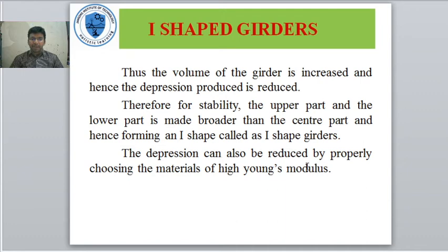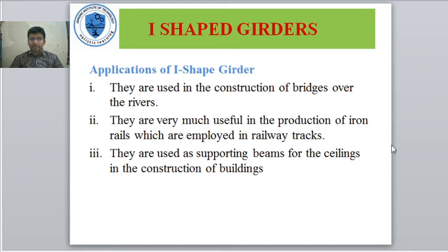The depression can also be reduced by properly choosing a material of high Young's modulus. Applications: I-shaped girders are used in the construction of bridges over rivers. They are very useful in the production of iron rails employed in railway tracks. They are also used as supporting beams for ceilings in the construction of buildings.